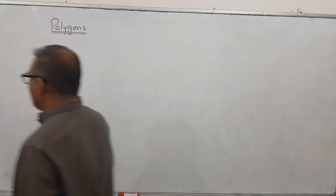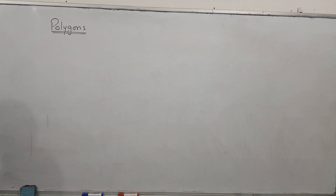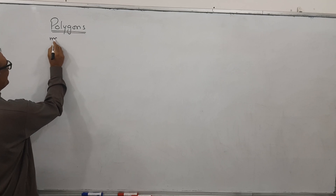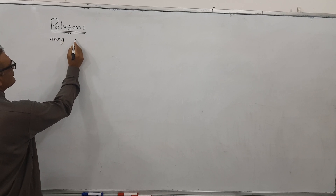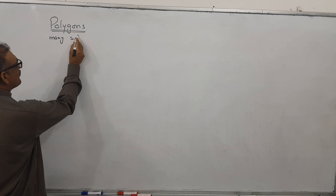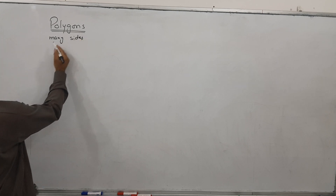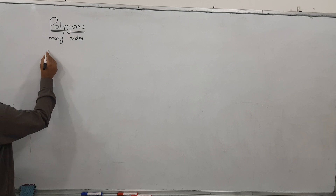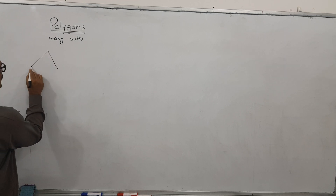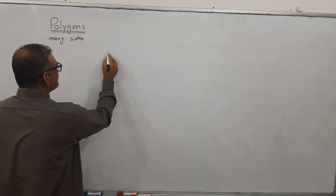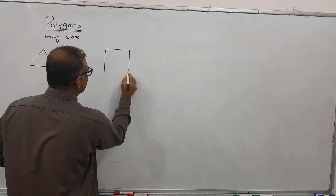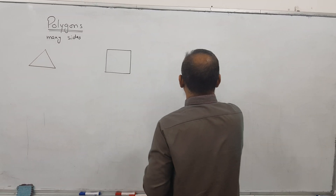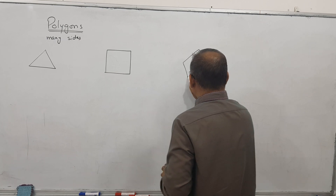Today's topic is polygons. Polygon — 'poly' stands for many, and 'gon' stands for sides. So polygon means many sides. For example, a triangle, a square, and a pentagon, which I discussed last time.